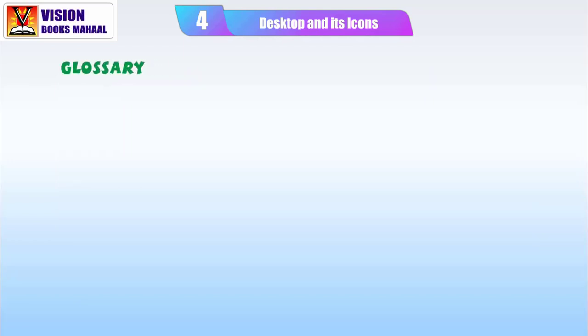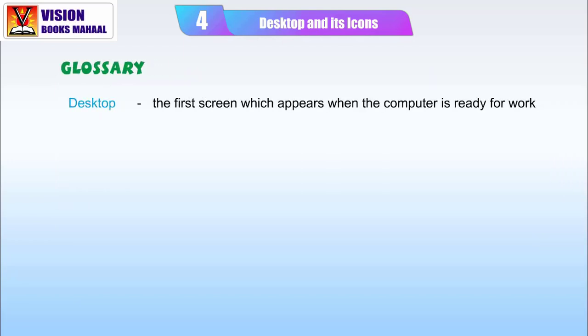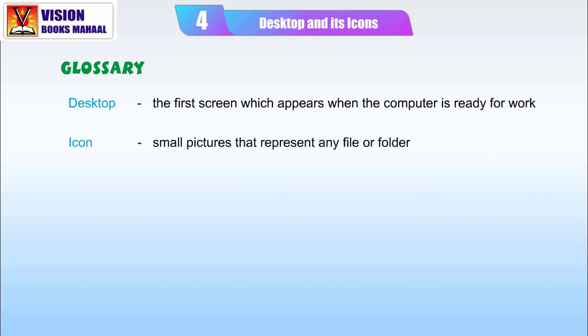Glossary — Desktop: the first screen which appears when the computer is ready for work. Icon: small pictures that represent any file or folder.